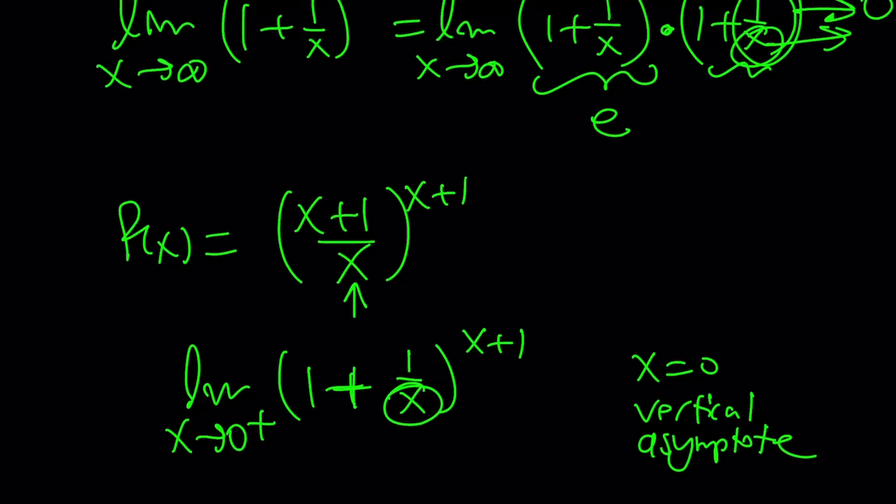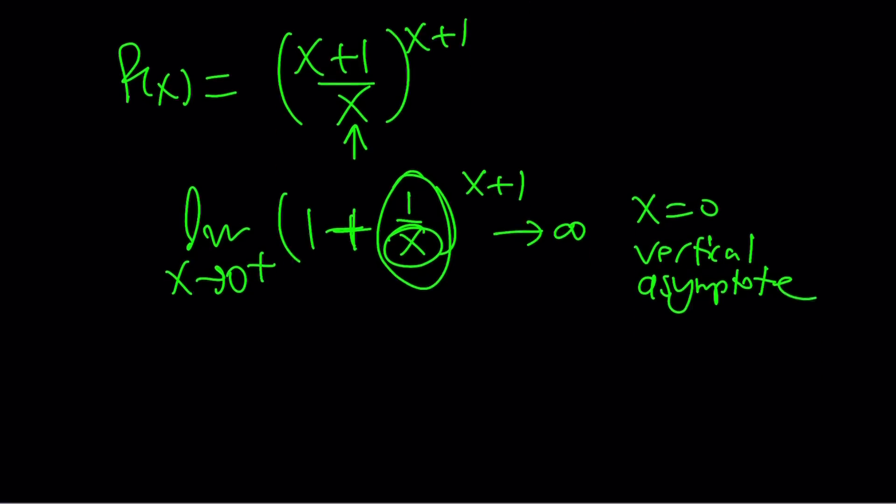But this idea tells you, as x approaches 0 from the right, this is going to approach positive infinity. Why is it important to approach from the right? Because it's going to approach infinity. If you approach from the left, that's a different story. Make sense?